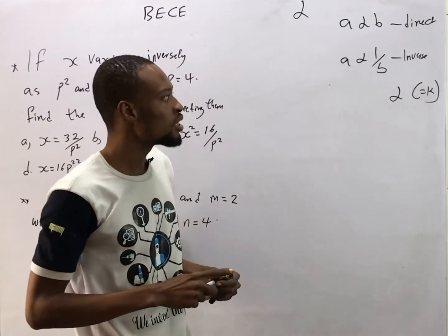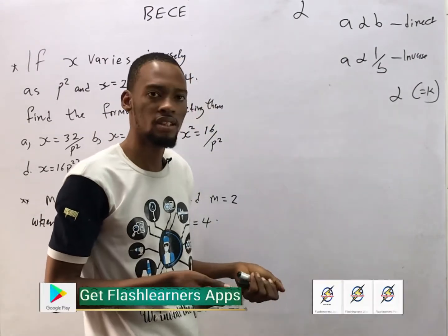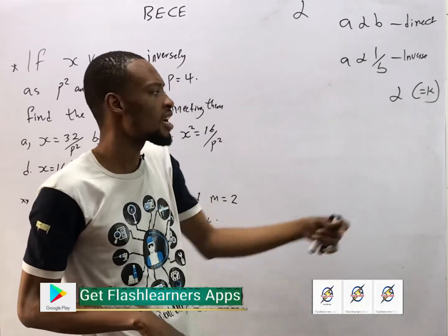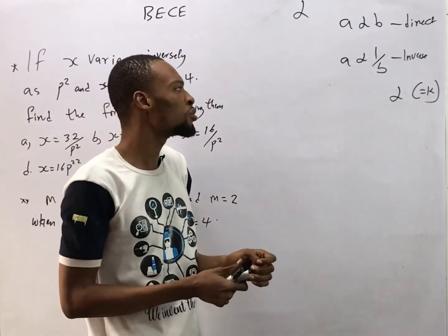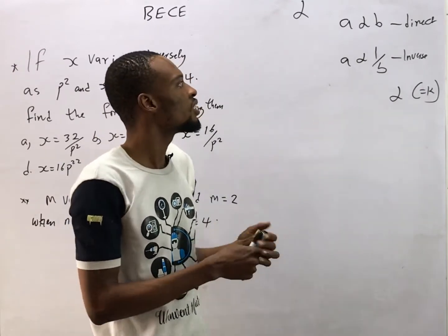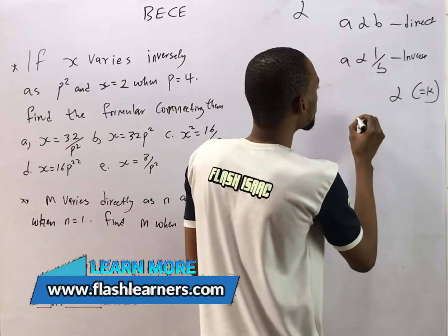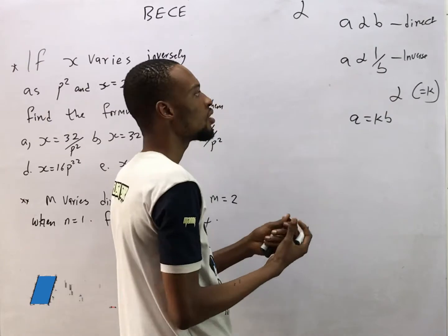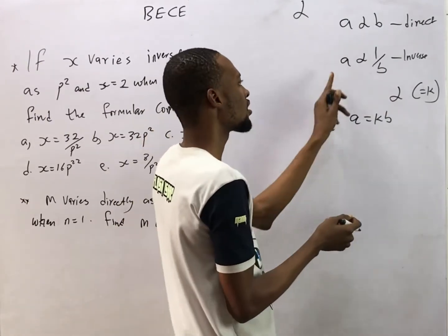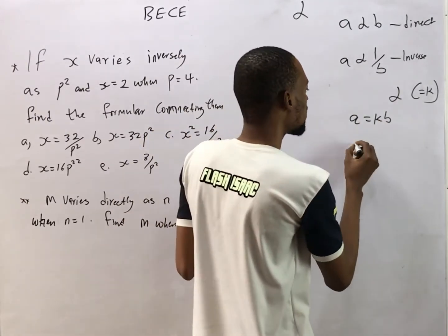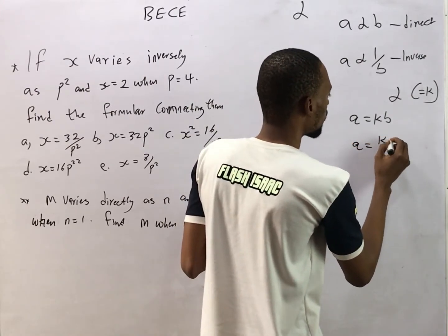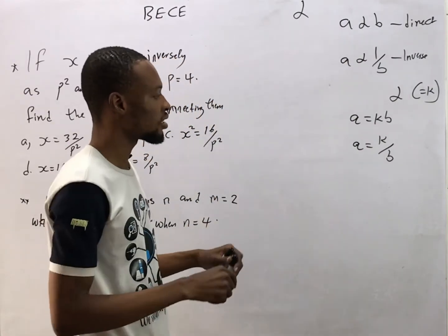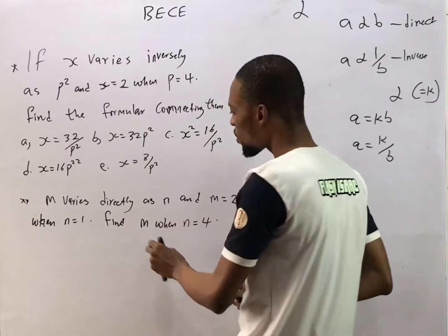Anywhere you see a proportionality sign, we put equals k (constant). After getting equals k, the first values in the variation allow us to find the constant. For direct variation, it becomes a = kb. For inverse variation, it becomes a = k/b — k times one over b. So that's that.